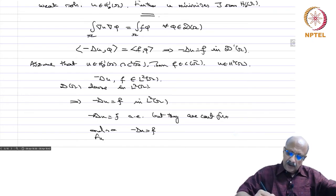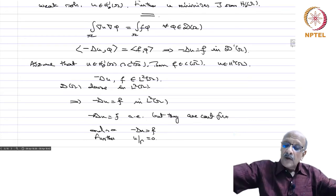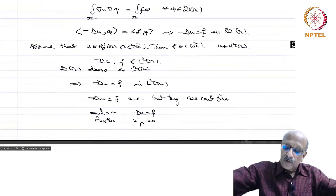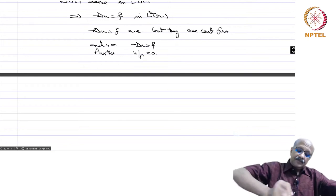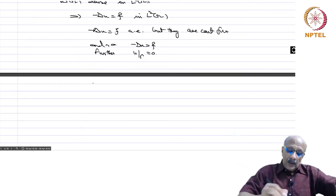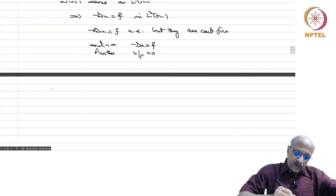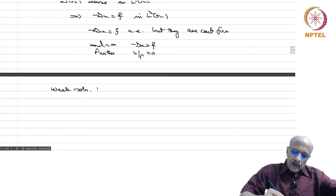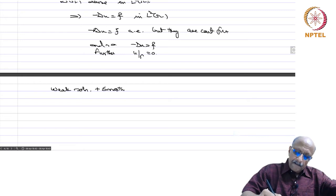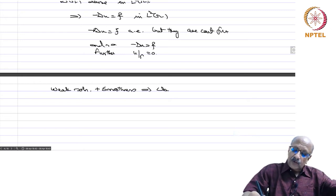Further, u restricted to gamma equals 0. Therefore, we have that it is a classical solution. So: weak solution plus smoothness implies classical solution.